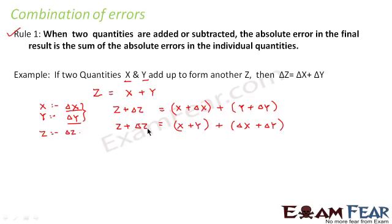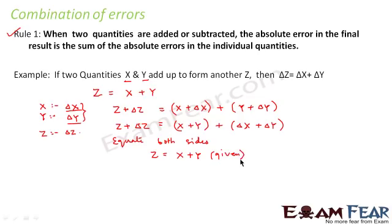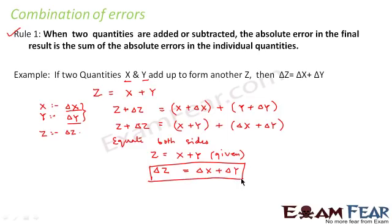If we equate both sides of the equation, we find that z is already equal to x plus y — that was the given condition. Therefore, delta z has to be equal to delta x plus delta y. That means when two quantities are added to give a third quantity, the absolute errors in the two quantities also add up to give the absolute error in the third quantity. So we proved that when two quantities are added or subtracted, the absolute error in the final result is the sum of the absolute errors in the individual quantities.